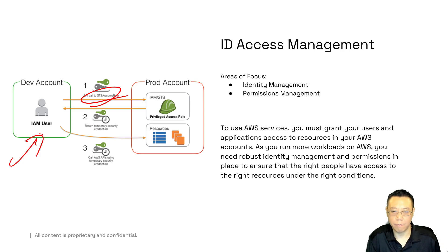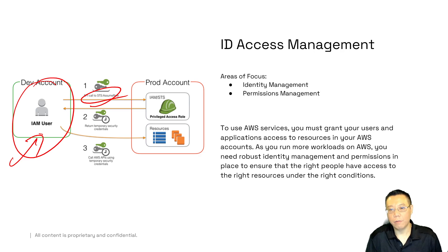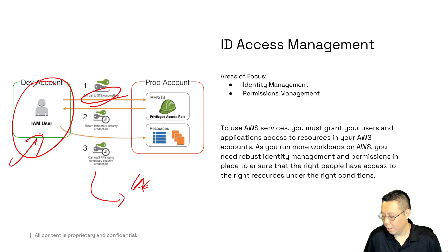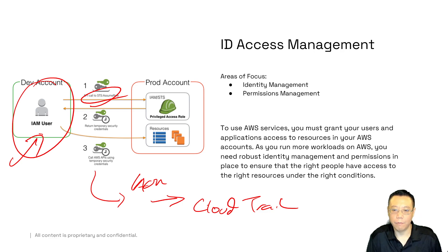Think back to what we talked about in a previous lecture: AAA means authentication, authorization, and accountability. Where does IAM fit in? Identity management itself is around authentication for the most part. Permissions management maps to authorization. Accountability is not necessarily a direct part of IAM, but IAM sends events to CloudTrail — so anything that happens on the IAM side, IAM will send events to CloudTrail — which provides that extra accountability for your AAA services.